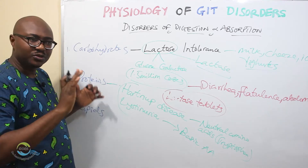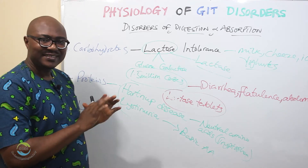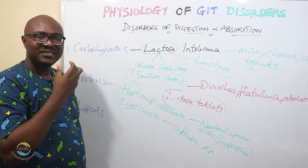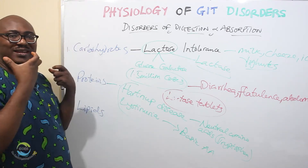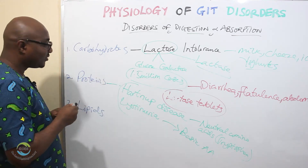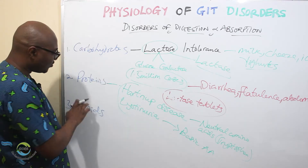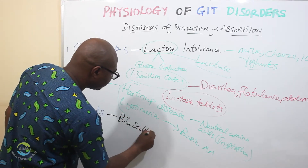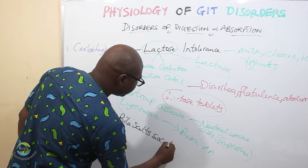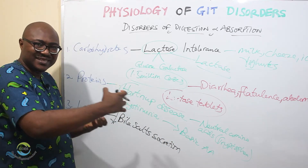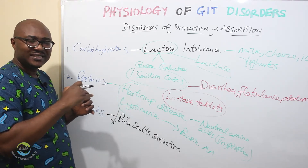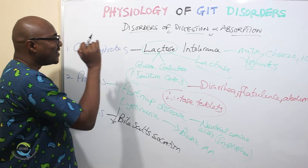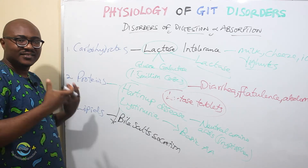Remember that lipid digestion and absorption is very special. One of the things that can cause problems is when there is a problem with bile salt secretion. There can be gallstones that block the secretion of bile salts, so bile salts are not there to enable the digestion of the fats you have taken, and the fats cannot be absorbed either.